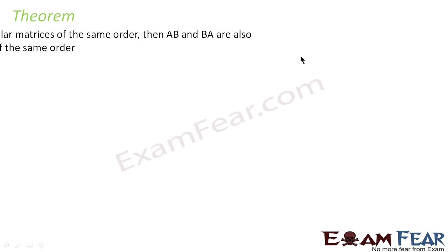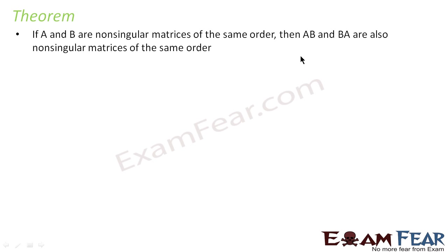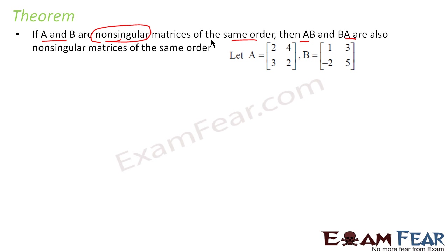There is a theorem: if A and B are non-singular matrices of the same order, then AB and BA are also non-singular matrices of the same order.